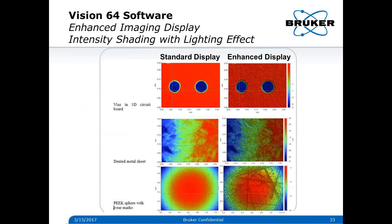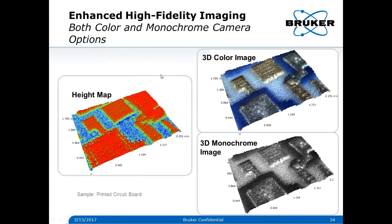This is our new enhanced imaging display. On the left you see three images of what the standard display used to look like — some via holes, some surface metal, and a peak sphere. On the right we turned on our enhanced lighting, which uses the intensity of the light overlaid on the 3D map. You can see the milling marks on the peak material where in the past you wouldn't be able to see that when displaying your 3D map — it's better data representation. We also have improved cameras: if you need true color, here is the height map of a circuit board, and now we can do a 3D color option or a 3D monochrome of that same image.